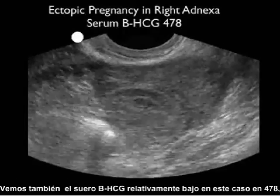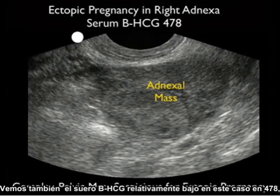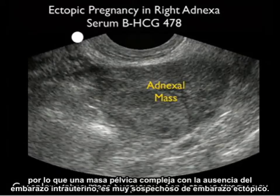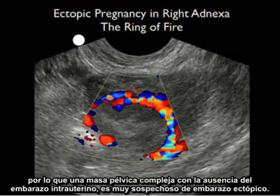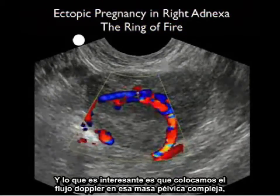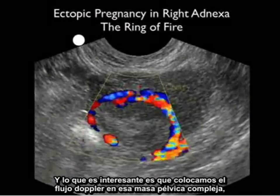Notice also the relatively low serum beta-HCG in this case at 478. So a complex pelvic mass with an absence of an intrauterine pregnancy is very suspicious for an ectopic pregnancy. And what's interesting is as we put Doppler flow on that complex pelvic mass,